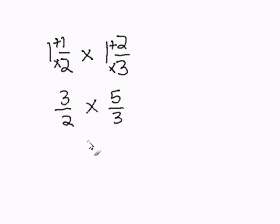Now you just simply multiply the fractions. 3 and 3 can be reduced. 3 goes into 3 one time, and 3 goes into 3 one time.